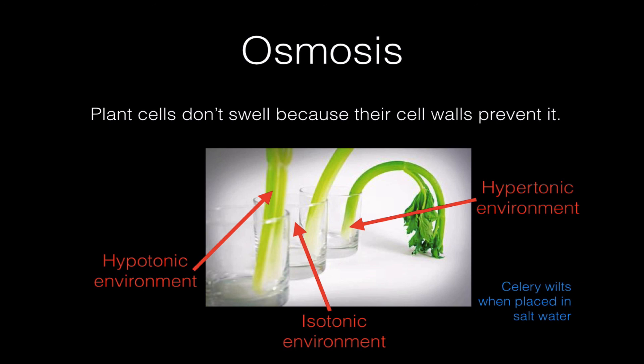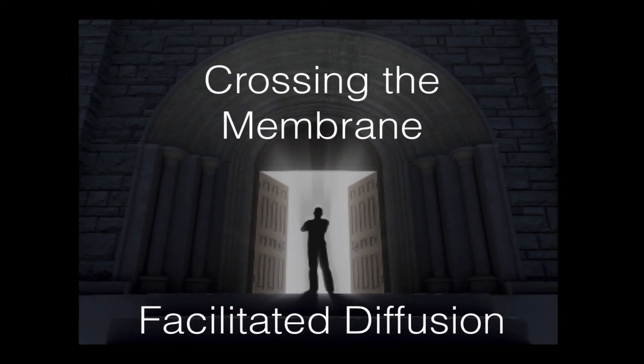So if you have celery at home in your refrigerator and it's gotten all flaccid and wilted because of dehydration, just recut the ends, put it in some water, and it'll plump right back up. Thanks for listening. The next video cast is going to be about facilitated diffusion.